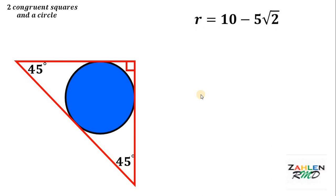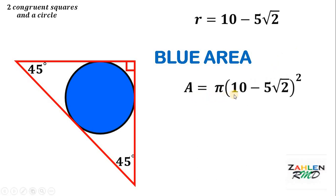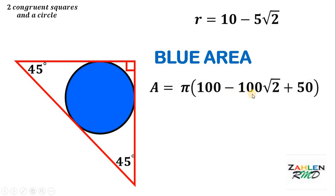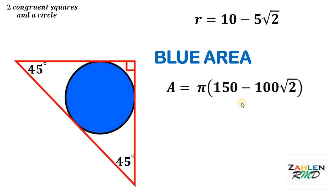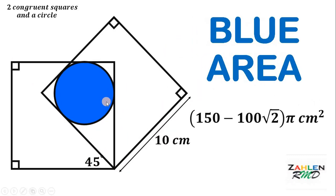Now we can find the area of the blue region, or the area of the circle, which is equal to pi r squared. We know the value of r, which is equal to 10 minus 5 times square root of 2. So we have the area of the circle equal to pi multiplied by the quantity 10 minus 5 times square root of 2, squared. Squaring this term, we get 100 minus 100 times square root of 2 plus 50. 100 plus 50 gives us 150. Therefore, the area of this circle shaded in blue must be equal to 150 minus 100 times square root of 2, times pi, square centimeters.